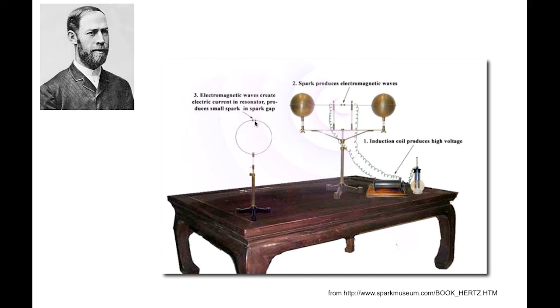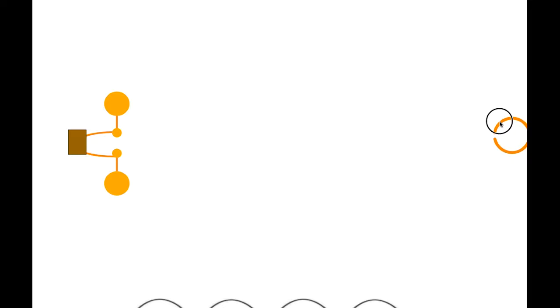In this diagrammatic version of it over here, you can see a simplified version of that spark generator, and what happened was it would produce a wave drawn simply like this, and a spark over here would generate a small spark over here. And as a result, that is exactly what occurred, and so Heinrich Hertz determined that there must have been some sort of wave travelling between the generator over here and the receiver over here.